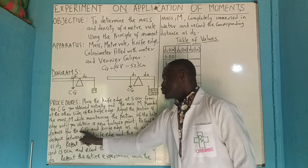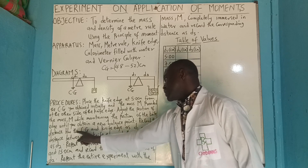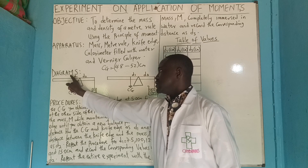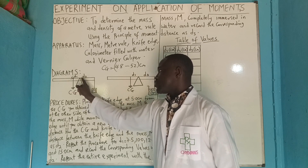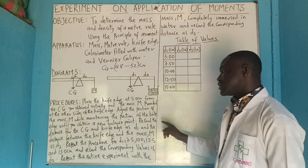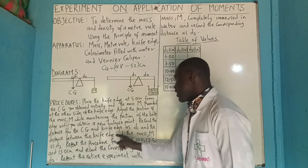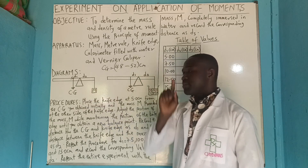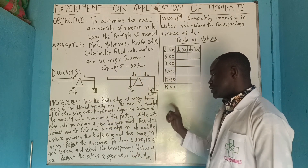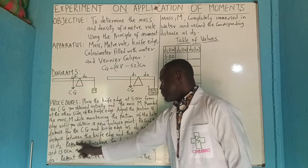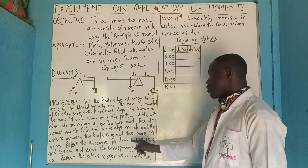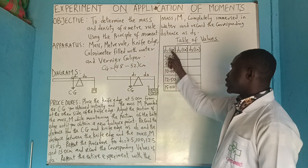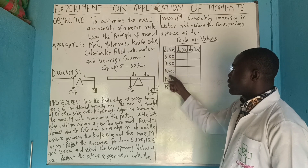Record the distance between the center of gravity and the knife edge as D1. That is from 50 to the knife edge - for example, 5 cm, which is constant. The distance between the knife edge and the new position of mass m that makes it balanced is noted as D2. You repeat the procedure for D1 equal to 7.5, 10.0, 12.5, and 15.0 cm, keeping D1 constant each time.